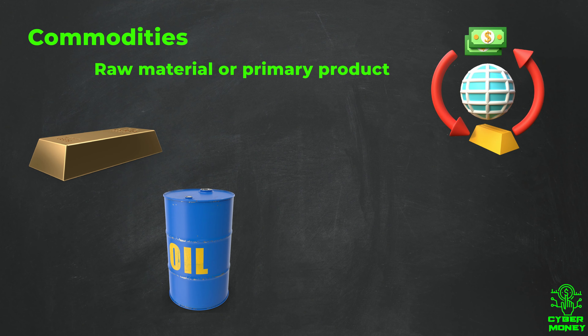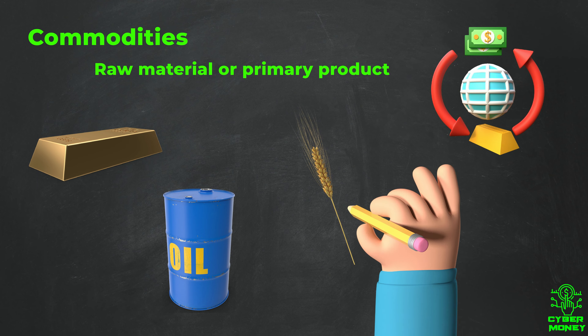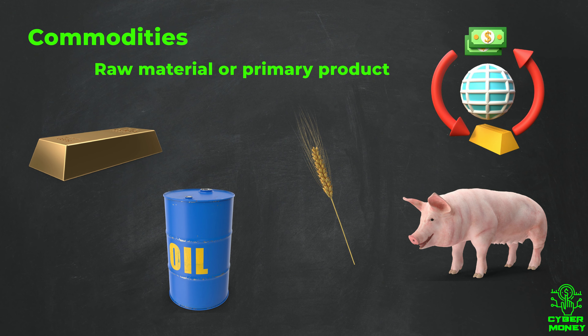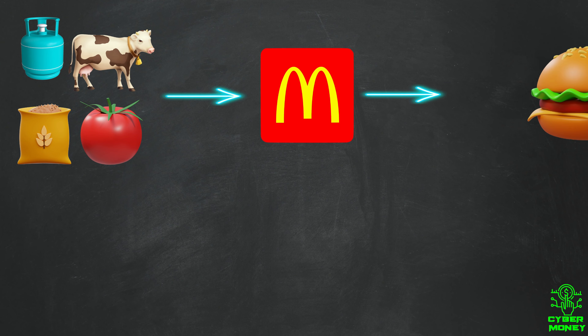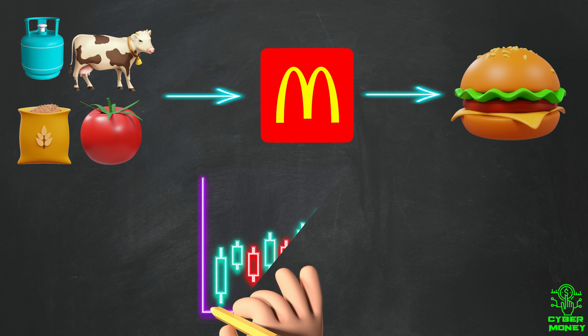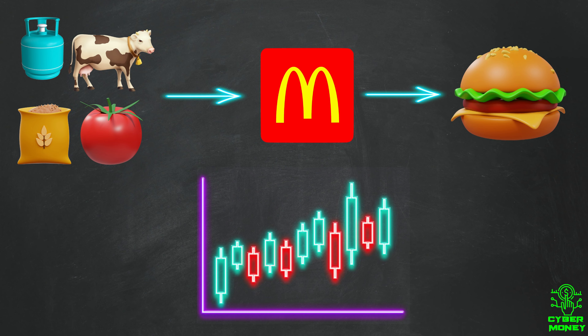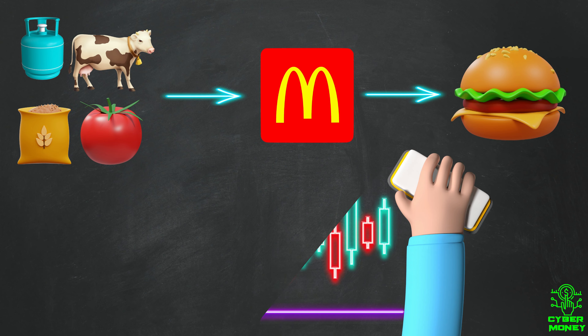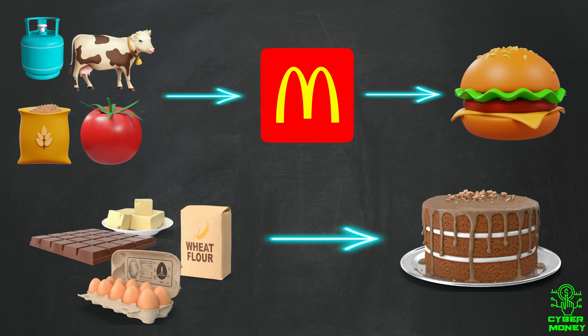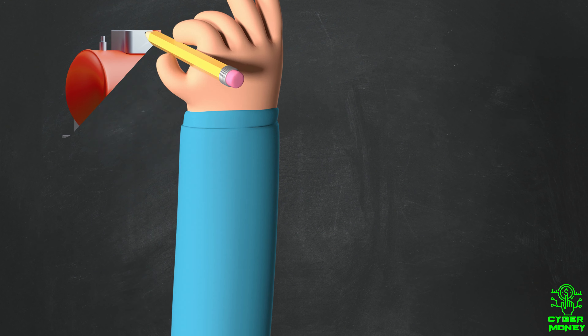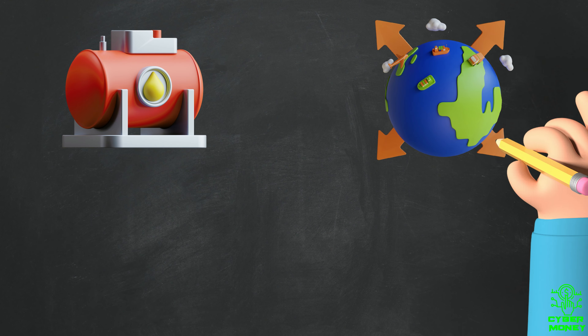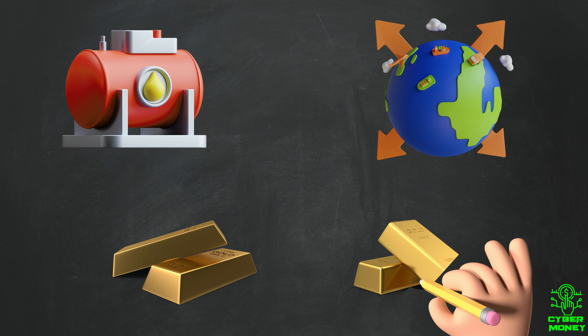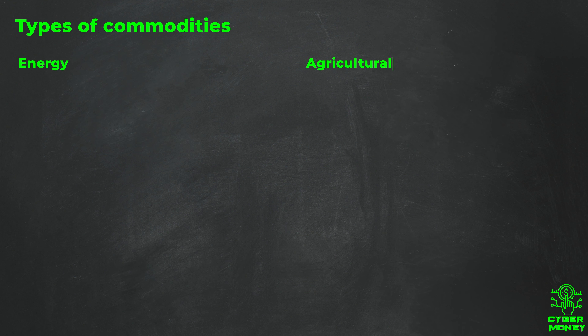In simple terms, a commodity is a raw material or primary agricultural product that can be bought and sold, such as gold, oil, wheat, or pork bellies. They're the building blocks for more complex goods and products, and they are often traded on markets like the stock market. Think of them like the ingredients for making a cake — the basic components used to make something more valuable. In short, it's a basic good used in commerce and is interchangeable with other goods of the same type.